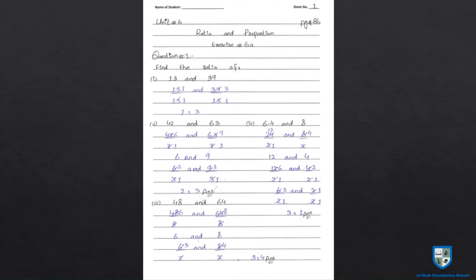Now we are going to start Exercise 6A of Unit 6 Ratio and Proportion. हमने ratio के बारे में explanation पढ़ी है — ratio की definition लिखनी और याद करनी है, equivalent ratio की definition भी लिखनी और याद करनी है। Question 1: find the ratio of — हमारे पास कुछ terms होंगी, हमने ratio find करनी है। Part 1: 13 and 39 — इनको simplest form में convert करेंगे तो ratio आ जाएगी।